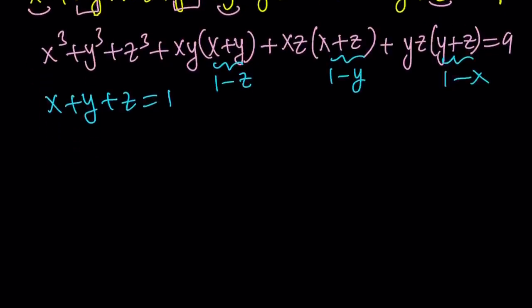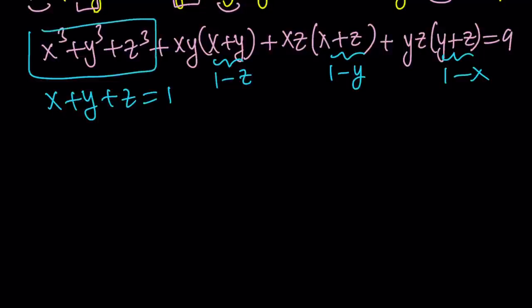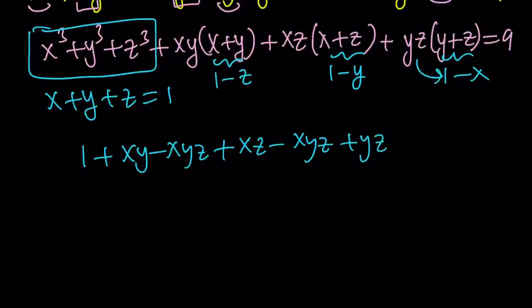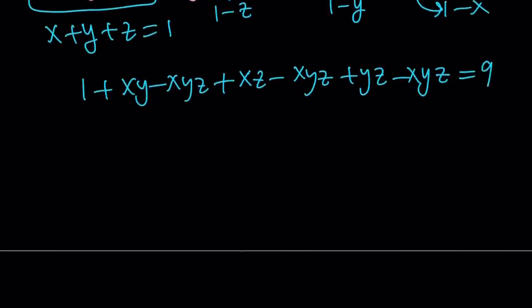And then the sum of cubes, as you know, is equal to 1 because that was given in the original problem. So we have now 1 plus xy minus xyz plus xz minus xyz plus yz, because I'm distributing this, minus xyz. And then this is equal to 9.